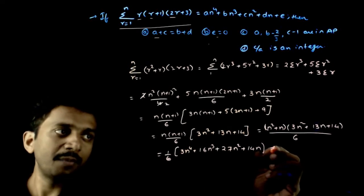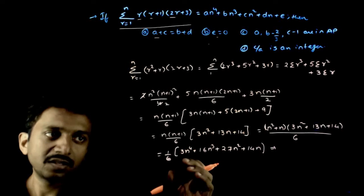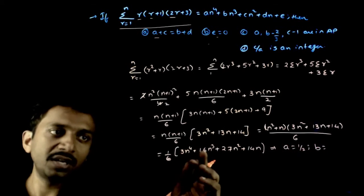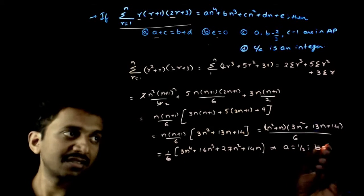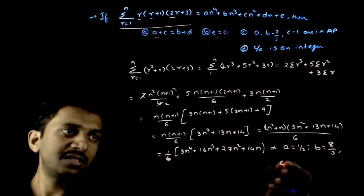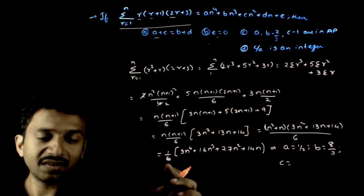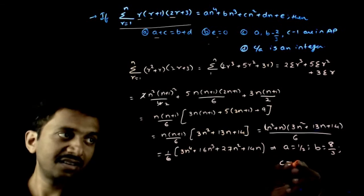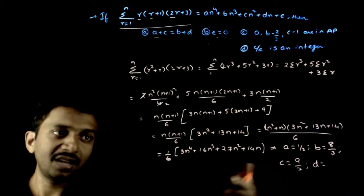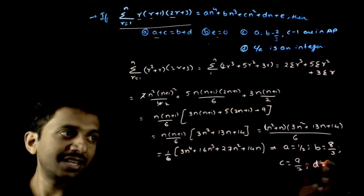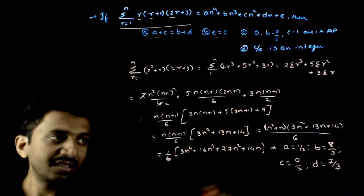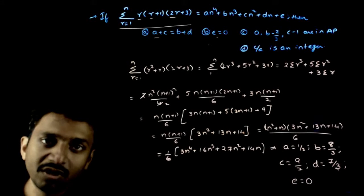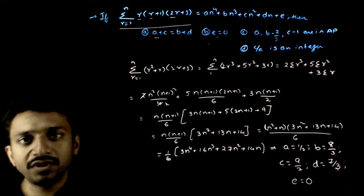So complete the expansion. Now if you compare this with a n power 4 plus b and so on, n power 4 coefficient is a equals half, b equals 16 by 6, that is 8 by 3, c equals 27 by 6, that is 9 by 2, d equals 14 by 6, that is 7 by 3, and e equals 0, there is no constant term. So these are the coefficients that you have.